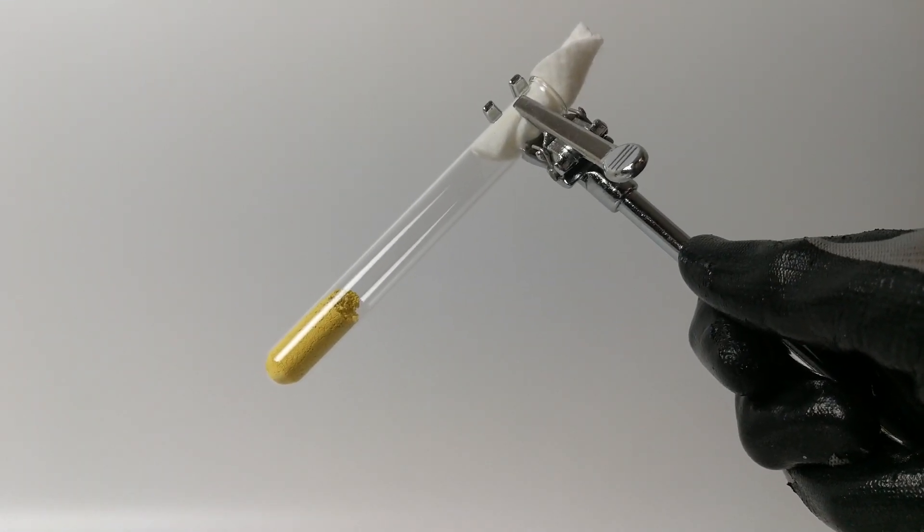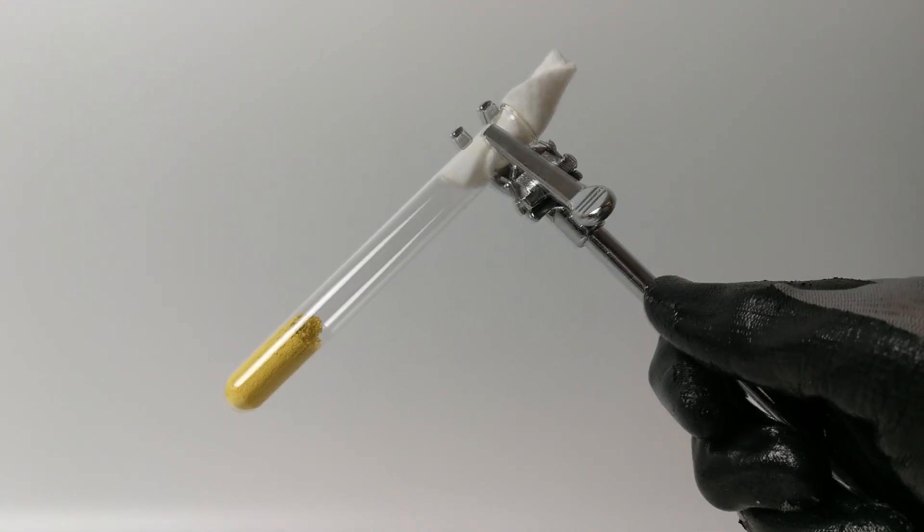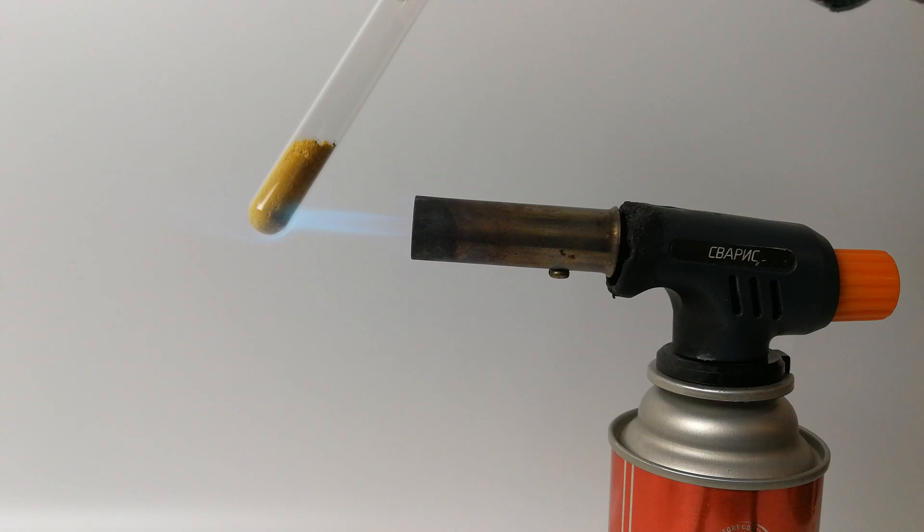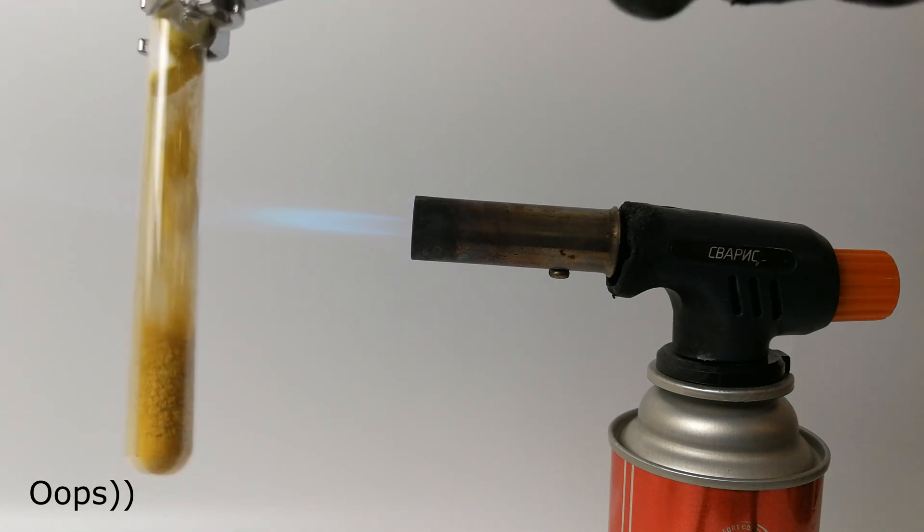Let's put a small amount of our oxalate into a test tube and plug it with a bit of cotton. Now, we can light our butane torch and start heating the test tube. The gas produced almost pushed our ferrous oxalate outside the test tube, so it was quite a good idea to plug it.